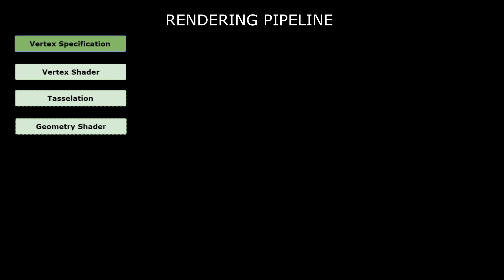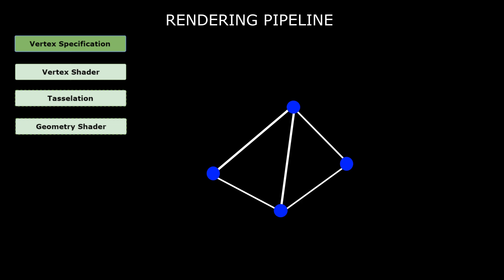The Geometry Shader is also an optional stage. This shader works with primitives — it takes one primitive and outputs zero or more primitives by adding or removing vertices. For example, we can take one triangle and modify it to be a rectangle consisting of two triangles by adding just one single vertex.